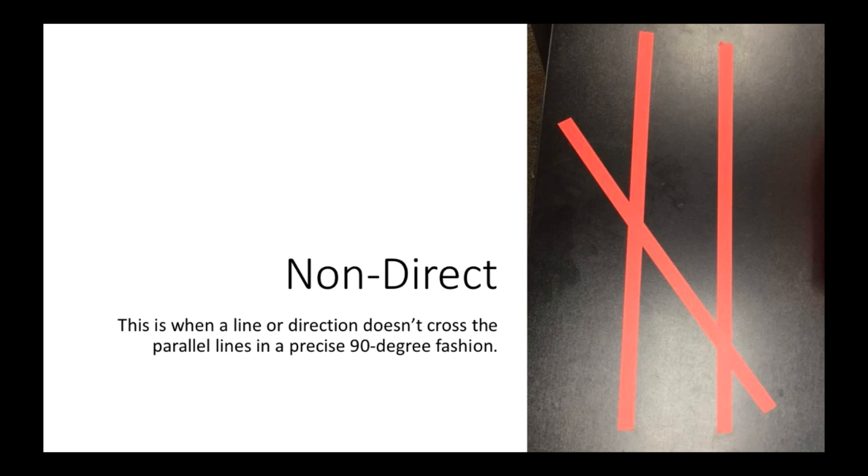Then there's non-direct. This is when a line or direction doesn't cross the parallel lines in a precise 90 degree fashion. So for example, if you have two vertical ones and this one is diagonal and in a weird angle across it.